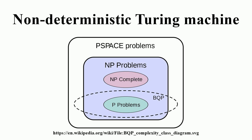How does the NTM know which of these actions it should take? There are two ways of looking at it. One is to say that the machine is the luckiest possible guesser — it always picks a transition that eventually leads to an accepting state, if there is such a transition. The other is to imagine that the machine branches into many copies, each of which follows one of the possible transitions. Whereas a DTM has a single computation path, an NTM has a computation tree.